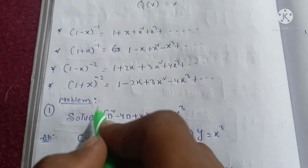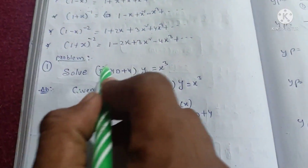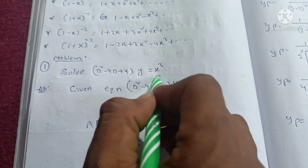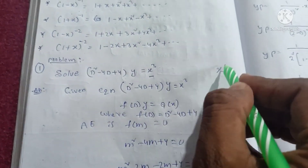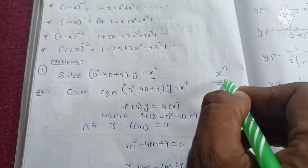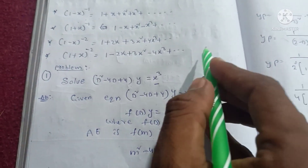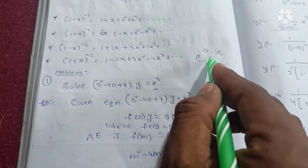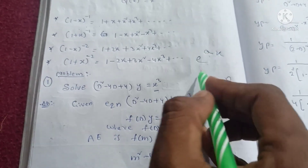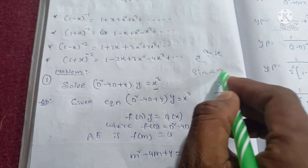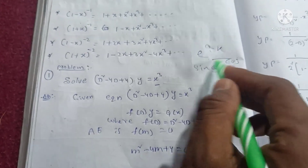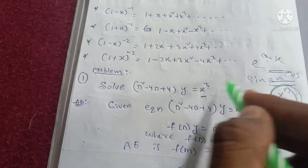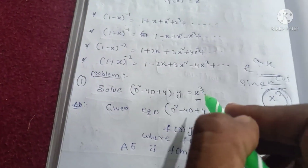There is a problem — the first problem. Solve: (D² - 4D + 4)y = x³. On the right-hand side we have x to the power n, so we use the x^n method — that is the third method. The first method is e^(ax), the second method is sine x or cos x, and the third method is x^n. Since x³ is x^n form, we use the third method.